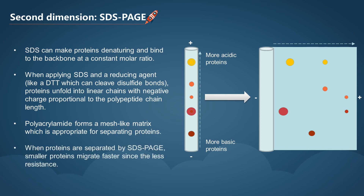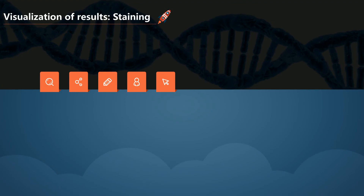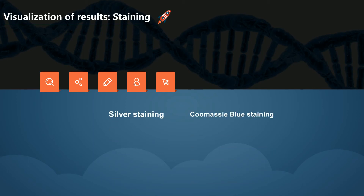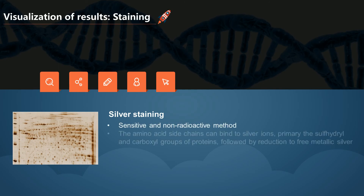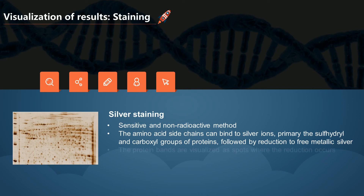There are various methods for visualization of proteins, but the most commonly used are silver staining and Coomassie blue staining. Silver staining is a sensitive and non-radioactive method. The amino acid side chains can bind to silver ions, primarily the sulfhydryl and carboxyl groups of proteins, followed by reduction to free metallic silver. As a result, the protein bands are visualized as spots where the reduction occurs. Silver staining is suitable for low protein levels because of its sensitivity.